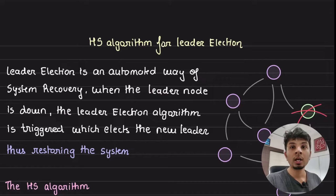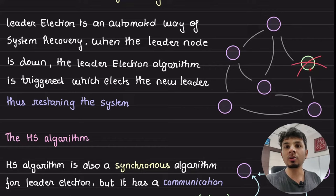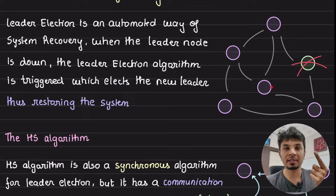In a distributed system with a leader and followers, there is a possibility that the leader node goes down. You could do a manual intervention and configure another node to be the new leader, but that takes time. So it's always better that your system auto-recovers by running a leader election algorithm, which automatically elects a new leader in a few seconds. This is why leader elections are important.